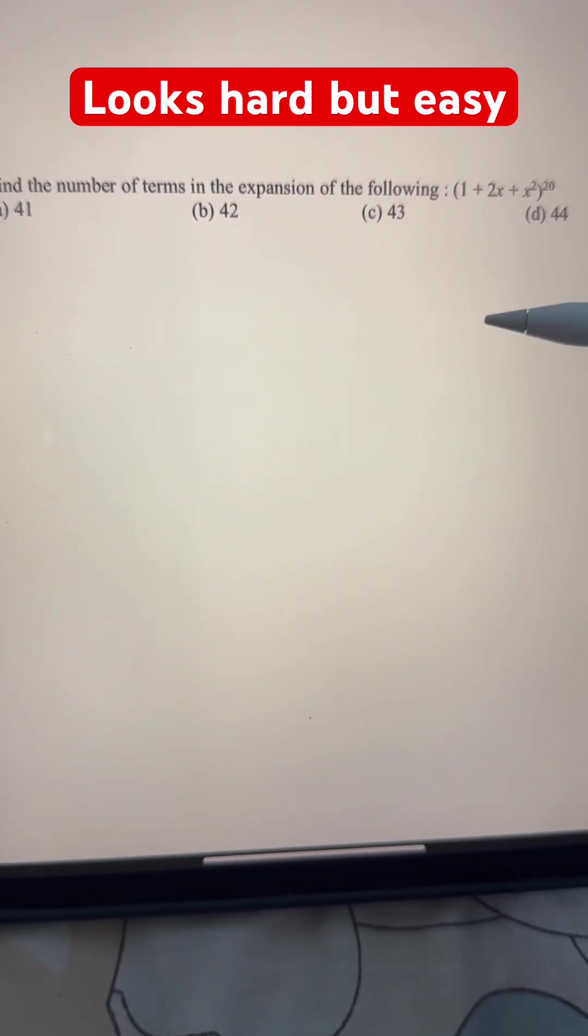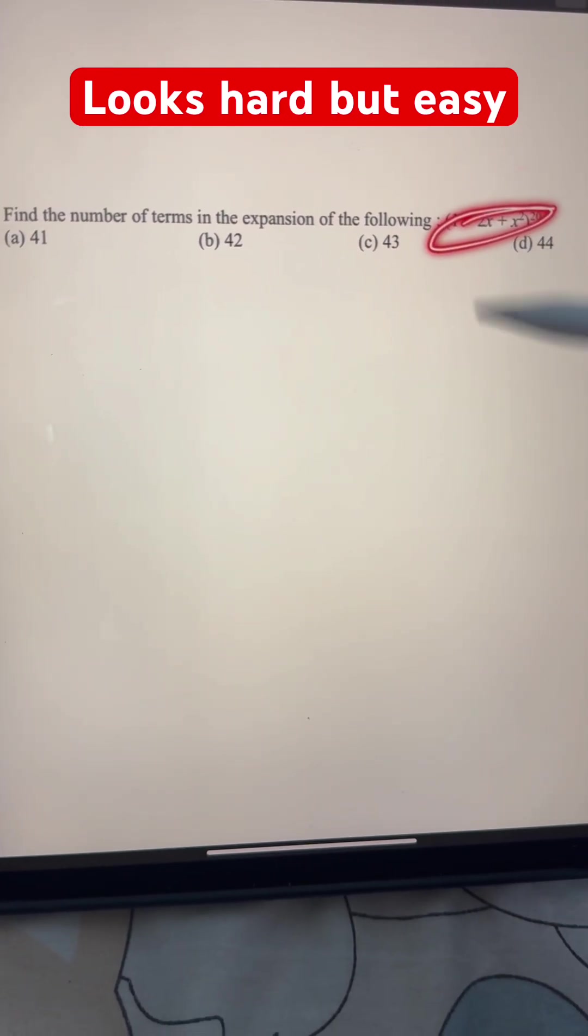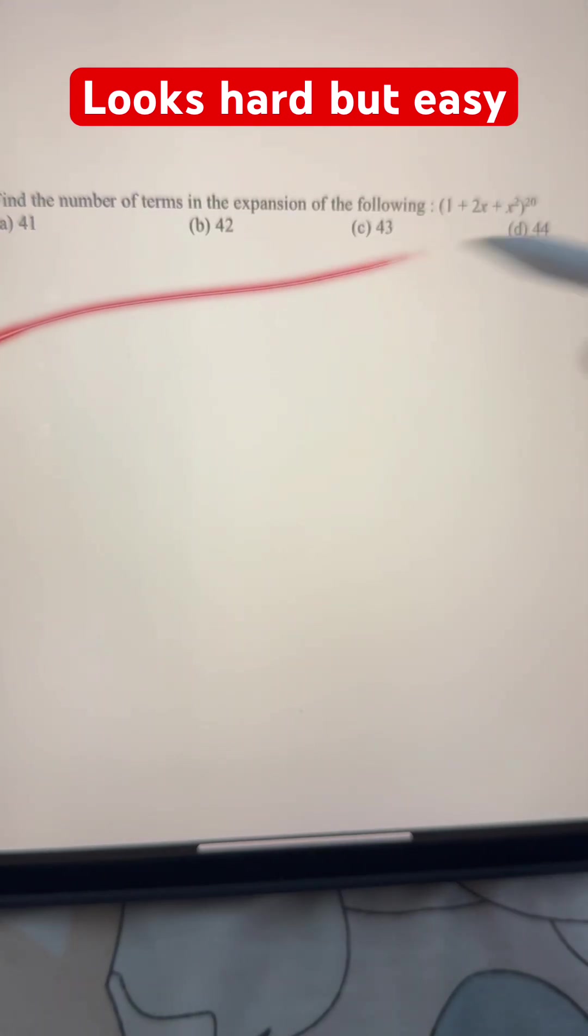Find the number of terms in the expansion of the following: 1 plus 2x plus x squared whole to the power of 20. We have four options given.